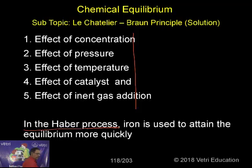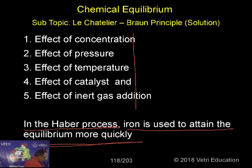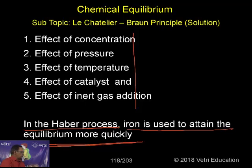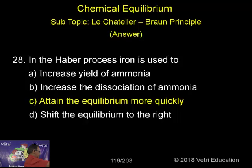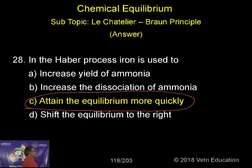Now, in the Haber process, iron is used to attain equilibrium more quickly. Iron is a catalyst, which will not shift the equilibrium, but is used to attain equilibrium more quickly — by reducing the energy of activation. By reducing the energy of activation, the reaction will be faster, so equilibrium will be attained quickly. So the correct answer is: to attain equilibrium quickly.